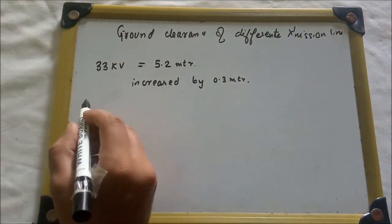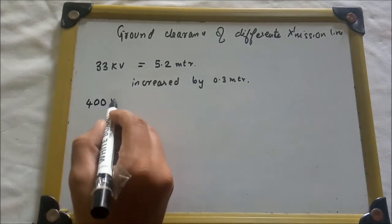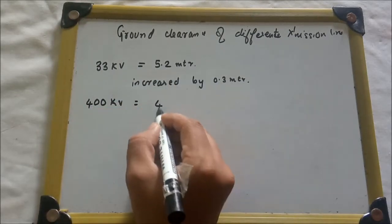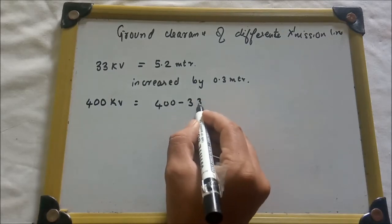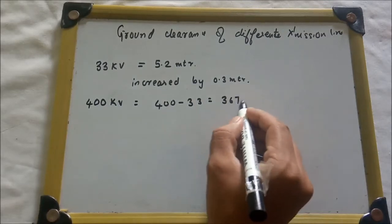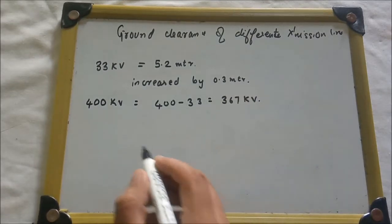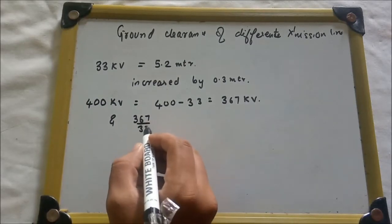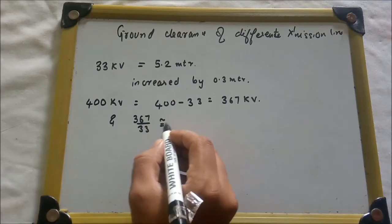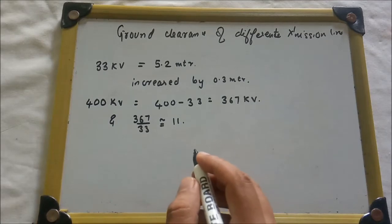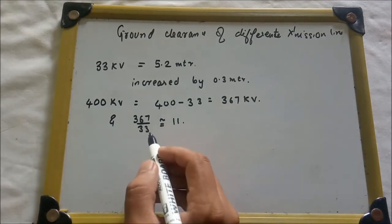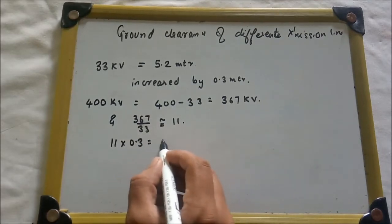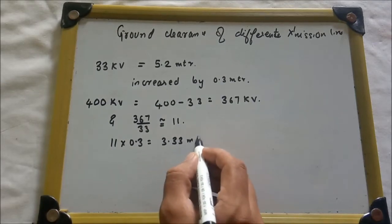What will be the minimum ground clearance of a 400 kV line? First, the base is 5.2 meters for 33 kV. We subtract: 400 minus 33 equals 367 kV. Then 367 divided by 33 gives us approximately 11.